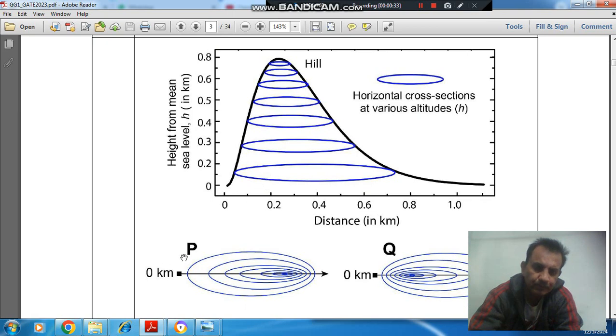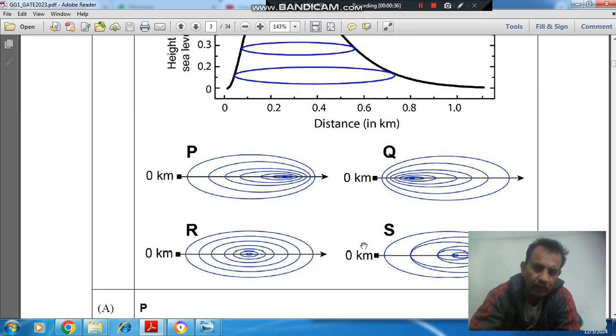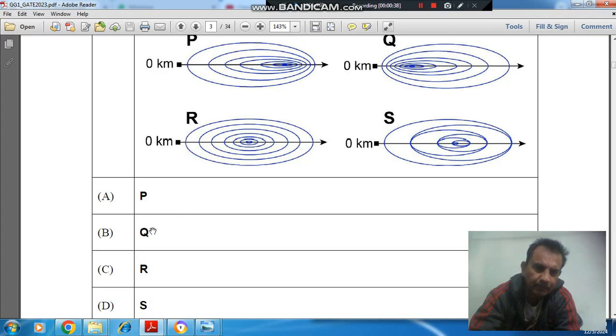Options are: this is P, this is Q, R, and S. Options are A: P, B: Q, C: R, and D: S.